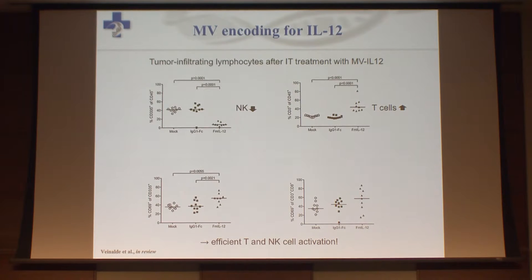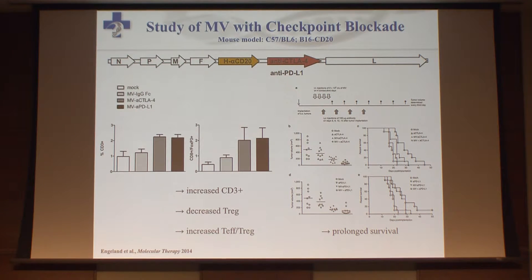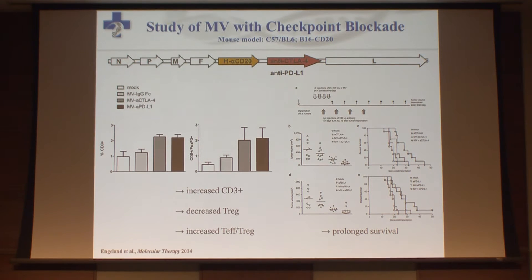We could also show tumor-infiltrating lymphocytes; the NK cell population went down, most likely due to their effector tumor cell killing, but we had T cell effector enhancement and efficient T and NK cell activation in these tumors. Switching to checkpoint antibodies encoded on the measles virus: we used murine variants of ipilimumab and pembrolizumab encoded on the measles virus genome, and could show a moderate survival benefit in a murine melanoma B16 model, with increased CD3-positive cells, decreased Treg population, and an increased T effector to Treg ratio.